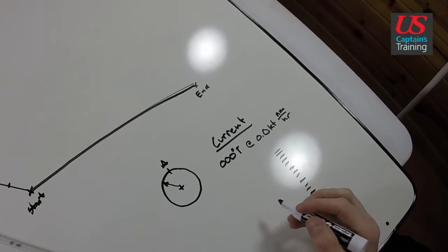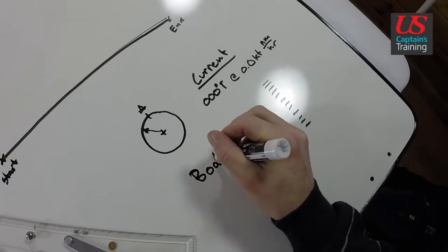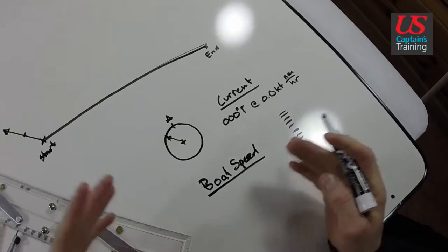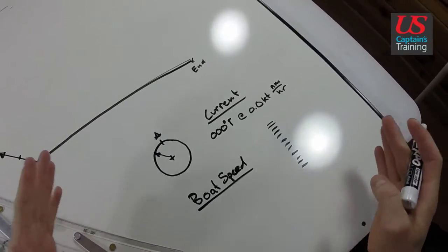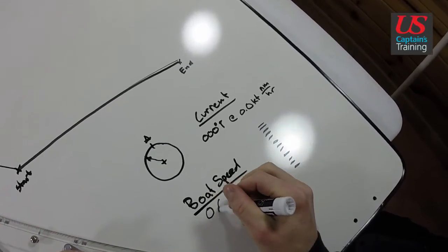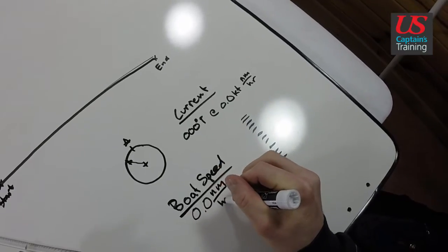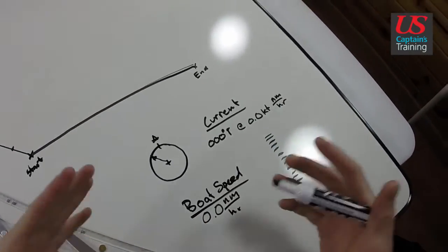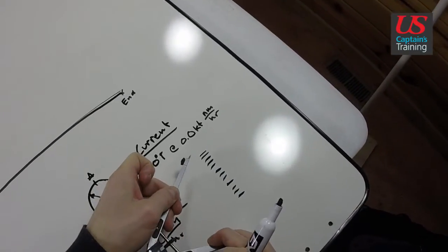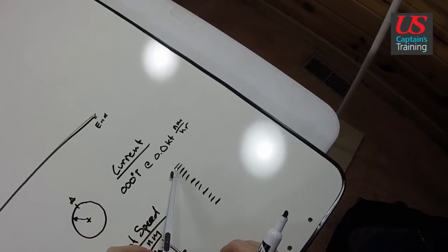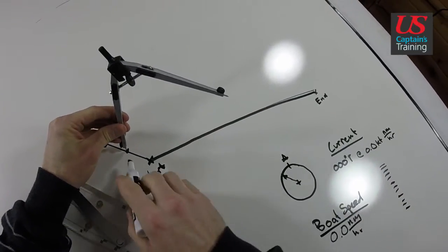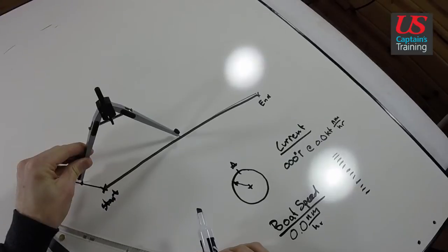Another thing given in the problem is boat speed. They'll give you your boat speed — somewhere between 6.7 and 11 knots. It's given in nautical miles per hour, the same as the current, so it's kind of a one-to-one ratio. You get your boat speed on your dividers and then you plot that from where you just got the current to the course you're trying to follow.